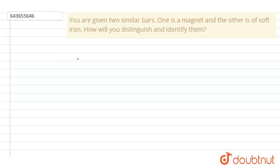You are given two similar bars. One is a magnet and the other is soft iron. How will you distinguish and identify them? To identify the difference between them and to identify which is a magnet and which is soft iron: